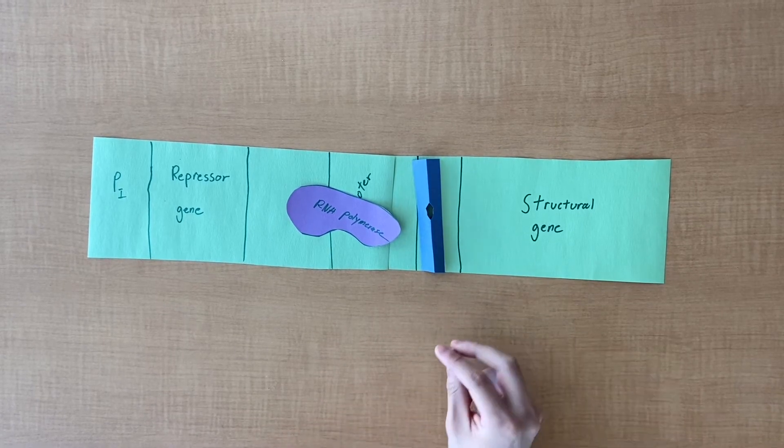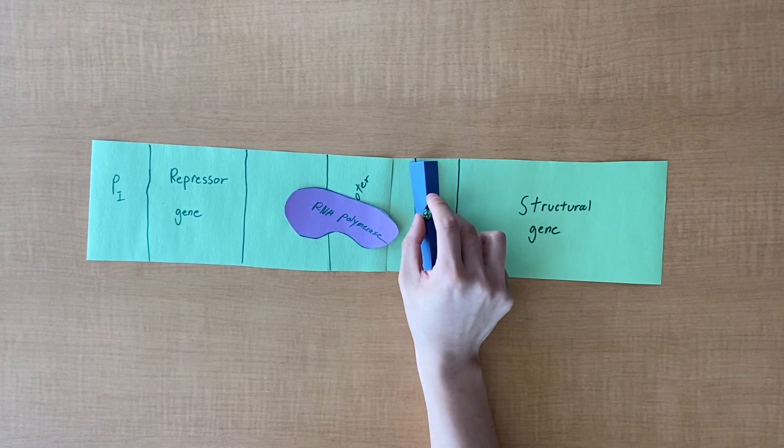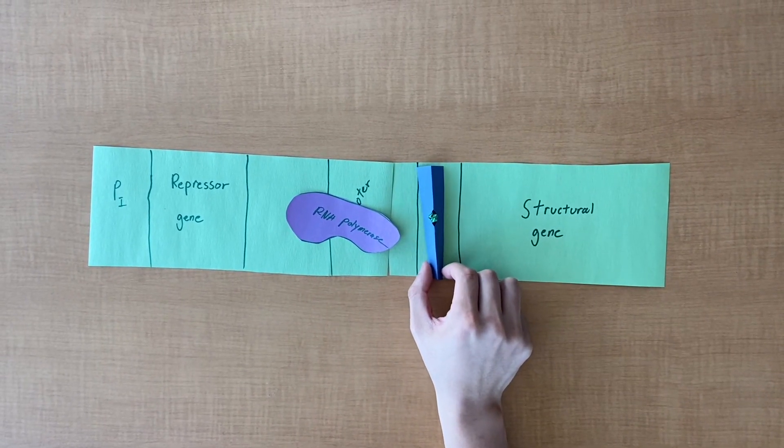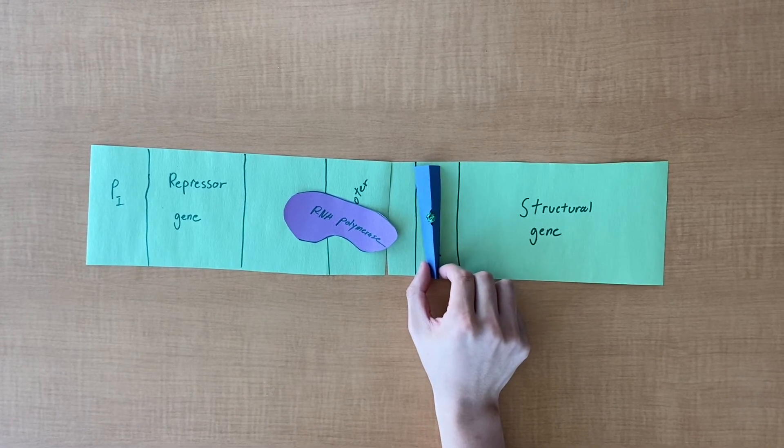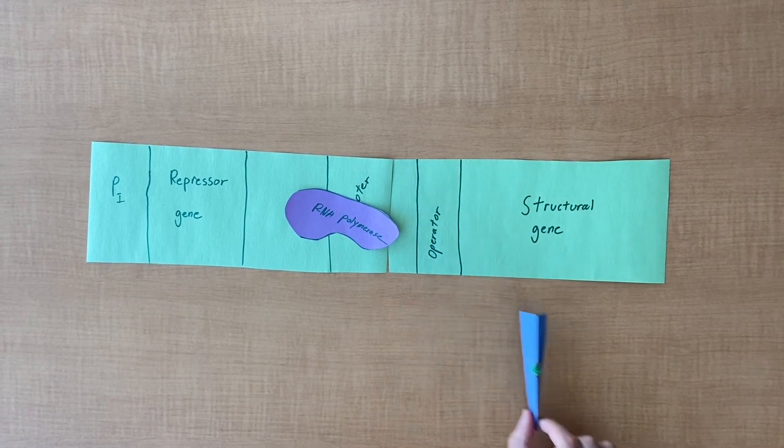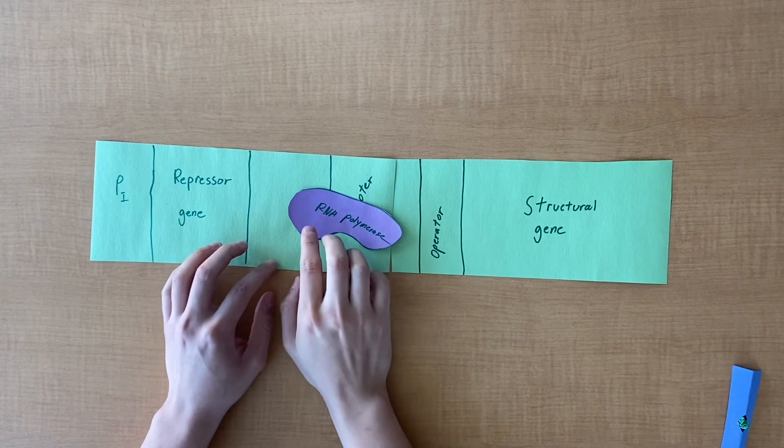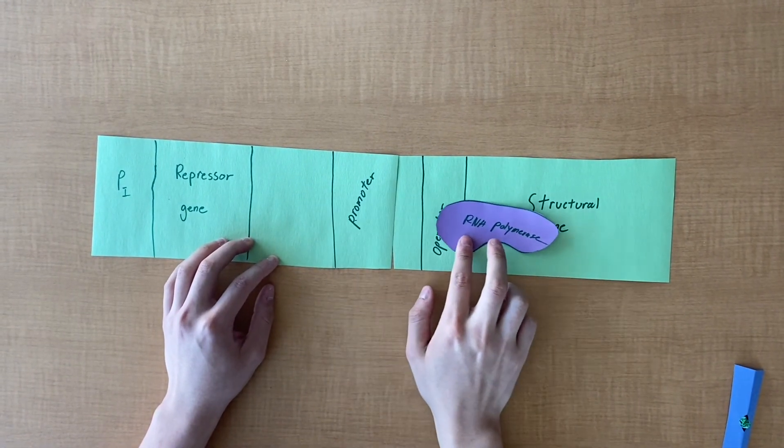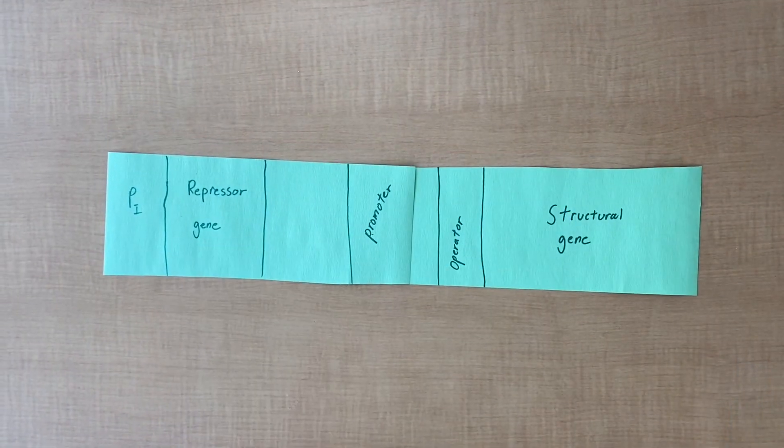When the effector molecule binds to the allosteric site of the active repressor, it makes the repressor protein inactive, thus detaching from the operator and allowing RNA polymerase to start transcribing the structural gene.